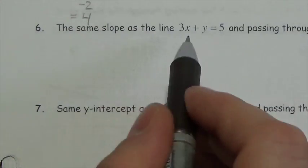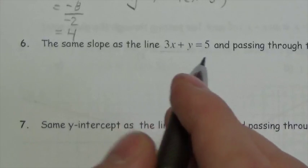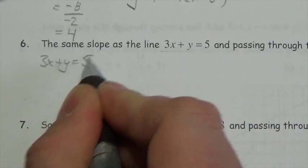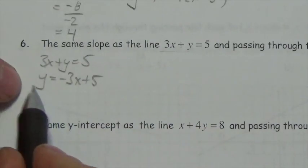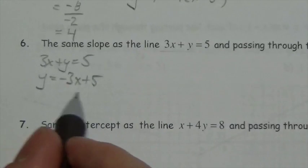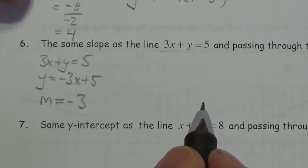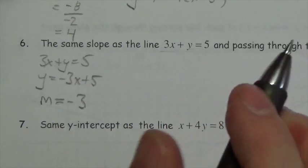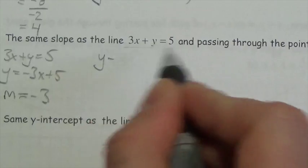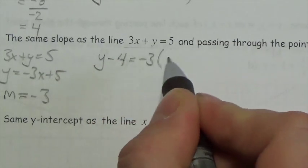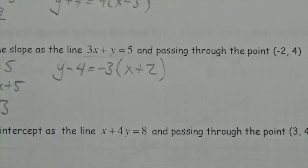For a line with the same slope as 3x plus y equals 5 passing through (negative 2, 4): first isolate y — y equals negative 3x plus 5, so the slope is negative 3. With slope negative 3 and point (negative 2, 4): y minus 4 equals negative 3 times (x minus negative 2), giving y minus 4 equals negative 3 times (x plus 2).